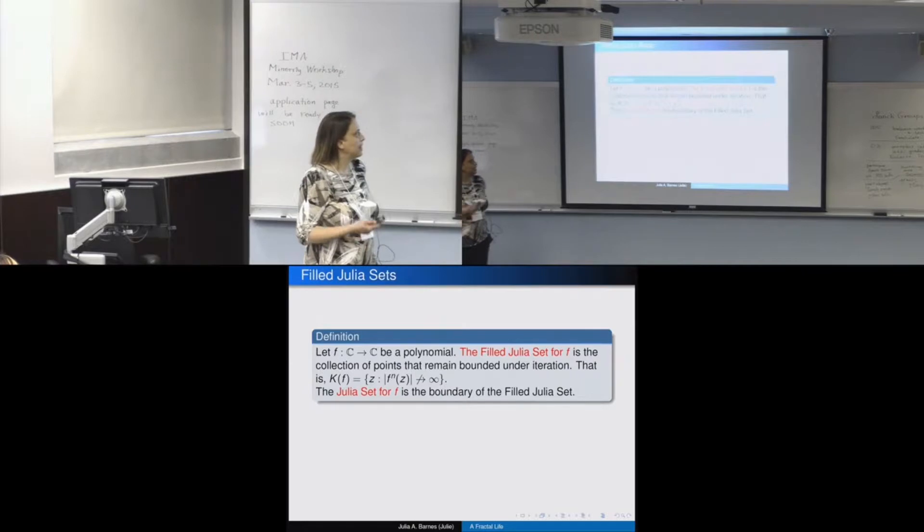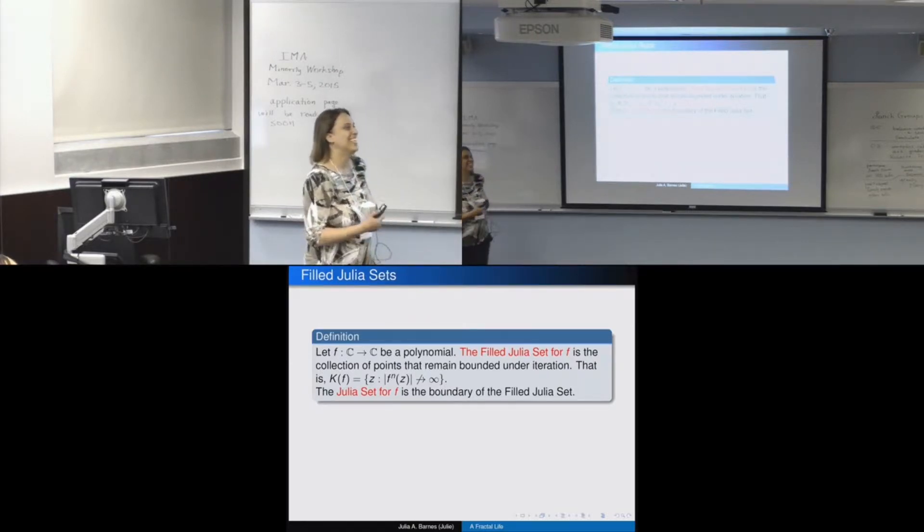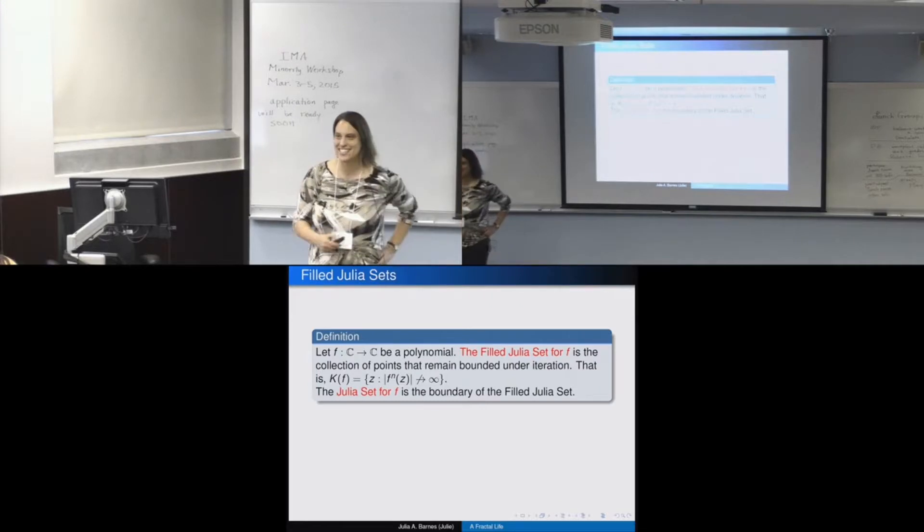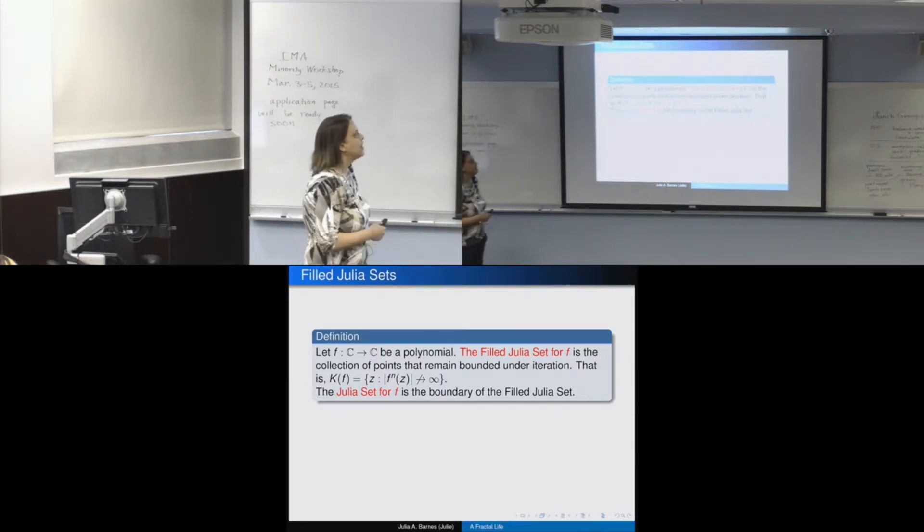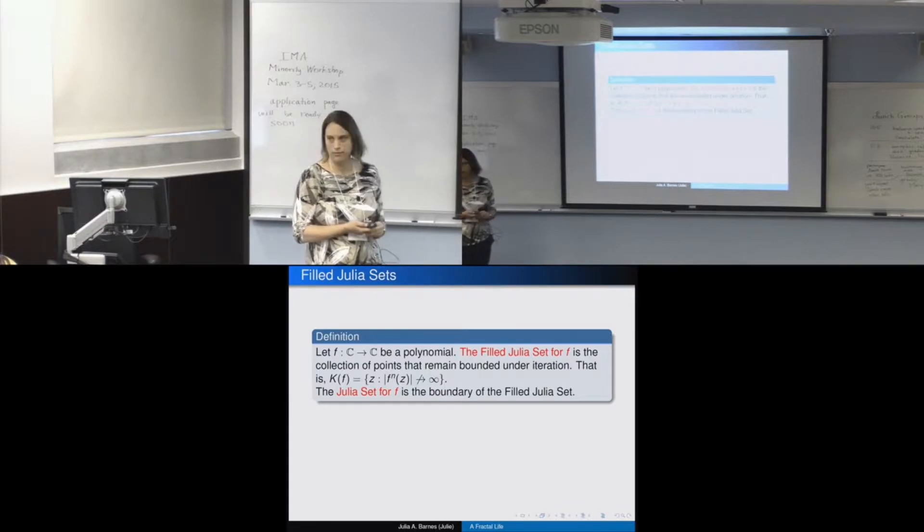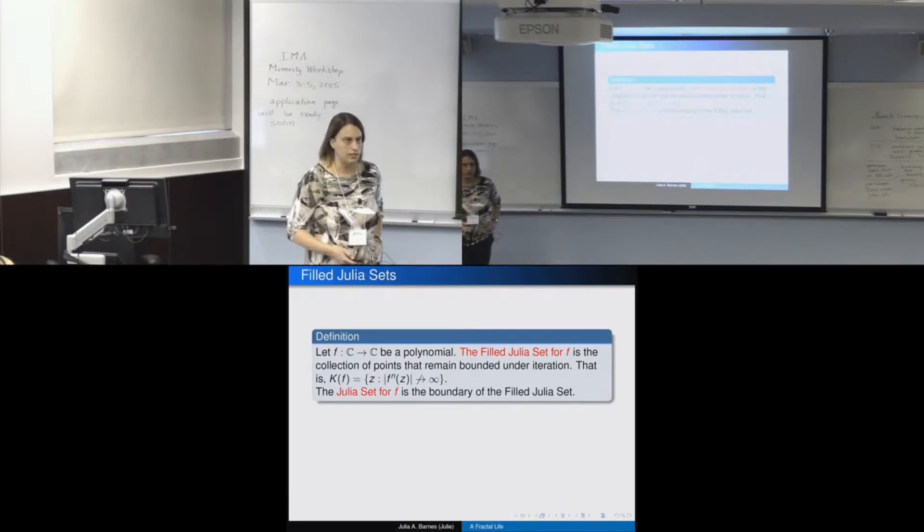And then the other word that was in my title is Julia. Even though it's completely unrelated to an actual Julia set that was named after a French mathematician over a hundred years ago, but that was his last name. But a filled Julia set is the collection of points that are bounded under iteration. So you look at the whole domain space and you look at points and see which ones, if you iterate over and over again, do you get big or do you get small?